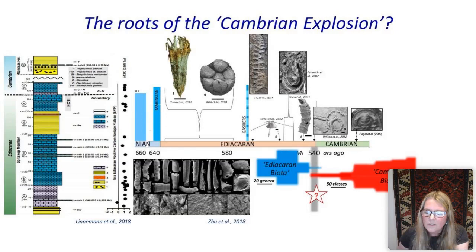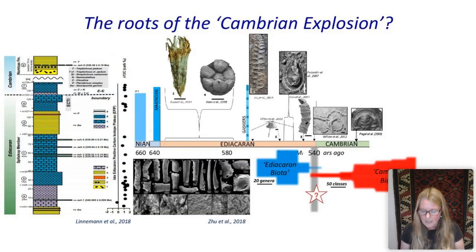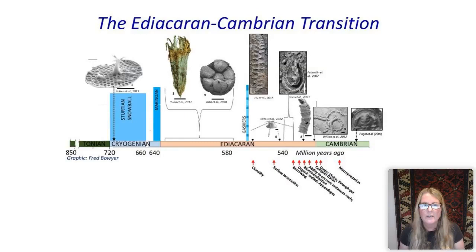Secondly, we've had findings of skeletal taxa — particularly some anabarytids — which are classically thought of as Cambrian skeletal taxa, now found in Ediacaran rocks. We now have evidence of a transition between the Ediacaran biota and the Cambrian biota, which really does bring into question whether we have any mass extinction at all. We really need to think about this as the Ediacaran-Cambrian transition.